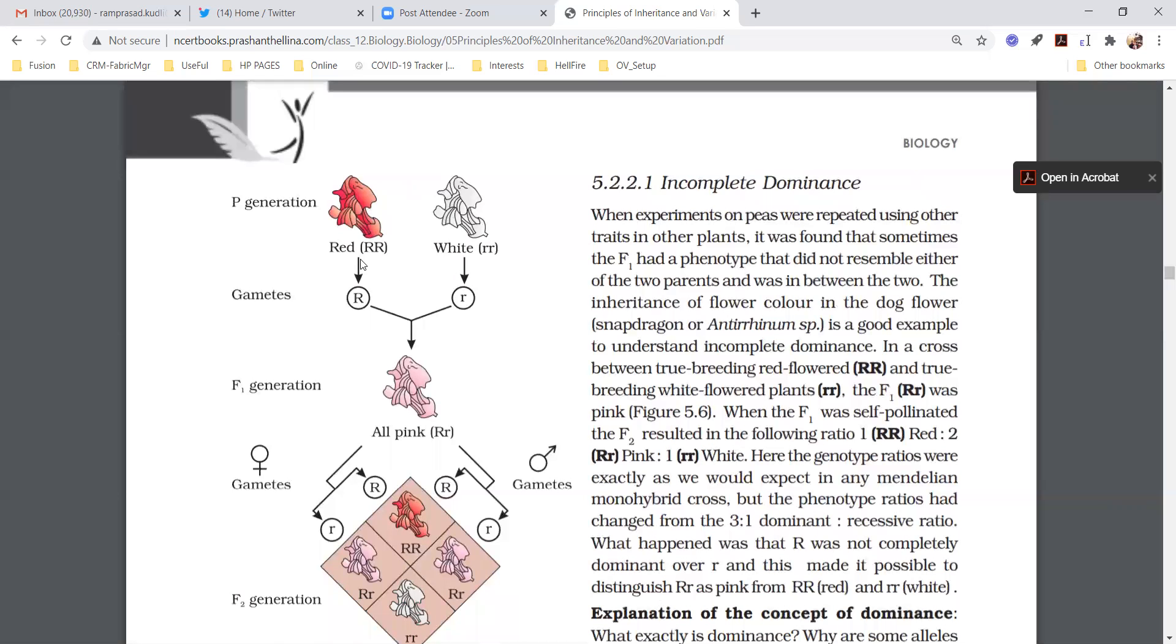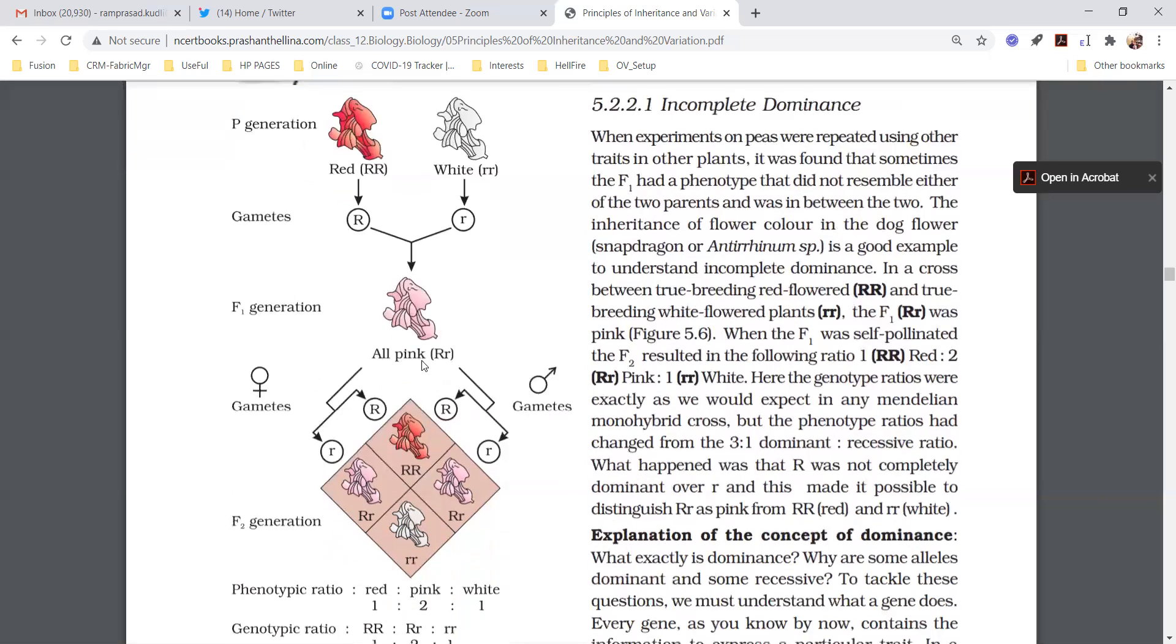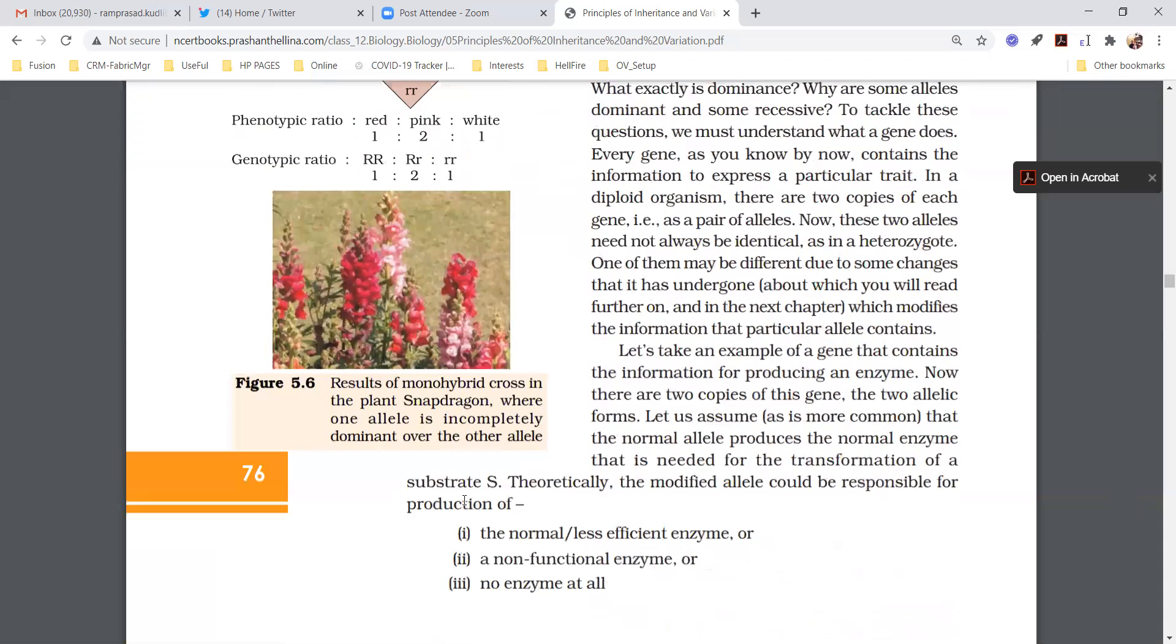You can write the flower if you want, or just with the letters you can explain. But here you have to mention homozygous dominant red flower, homozygous recessive white flower, and heterozygous pink flower in F1 generation. So this is about incomplete dominance.